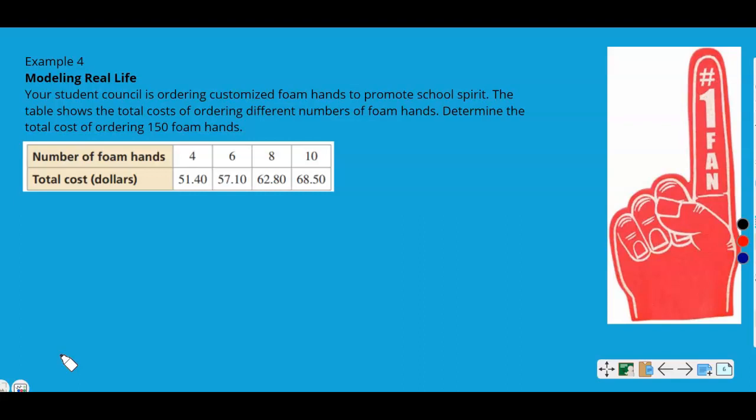So if you missed the first three, you should go back and watch the previous video. But we're going to get started on this one. It says your student council is ordering customized foam hands to promote school spirit. The table shows the total cost of ordering different numbers of foam hands. Determine the total cost of ordering 150 foam hands.